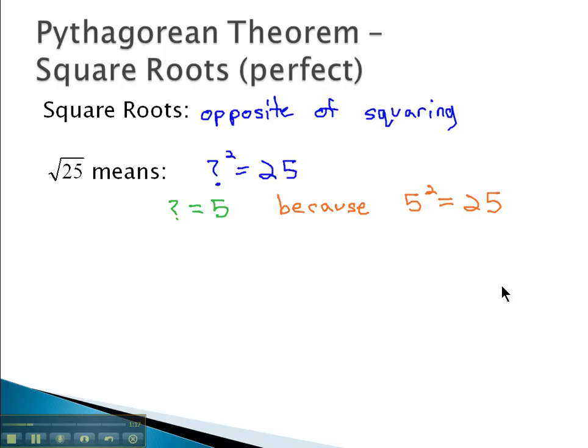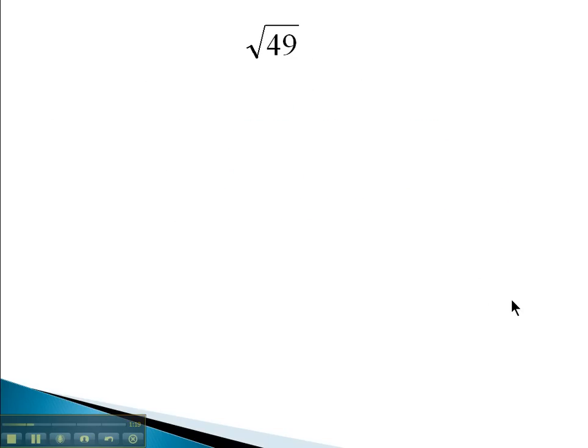So for example, if we were to see the square root of 49, we're asking what number squared equals 49? Well, you're probably aware that 7 squared equals 49. So we'll say the square root of 49 must equal 7. Square roots unsquare something.